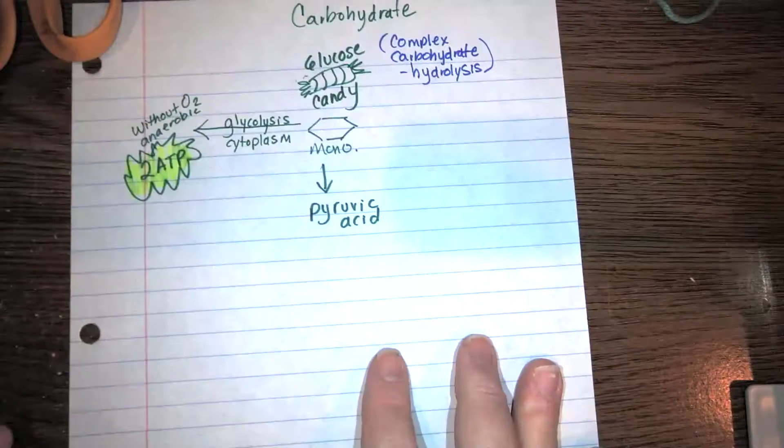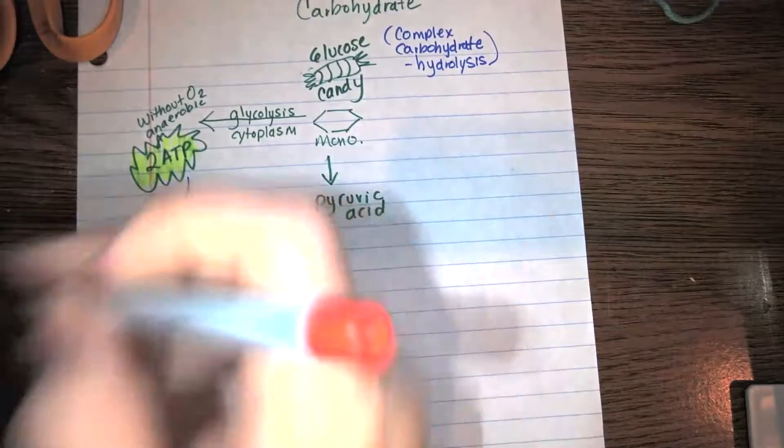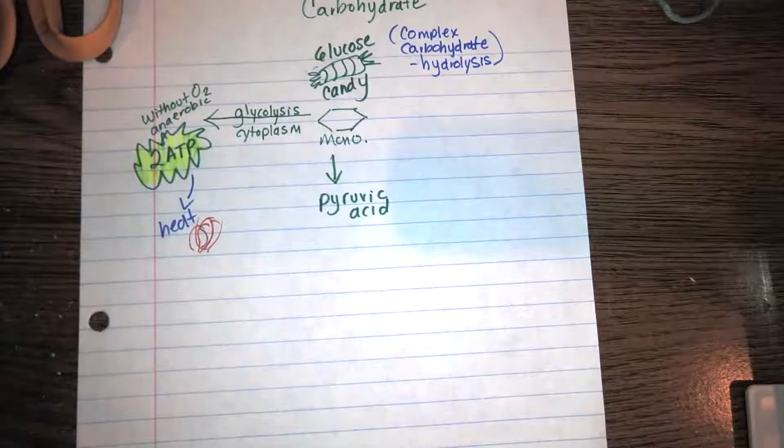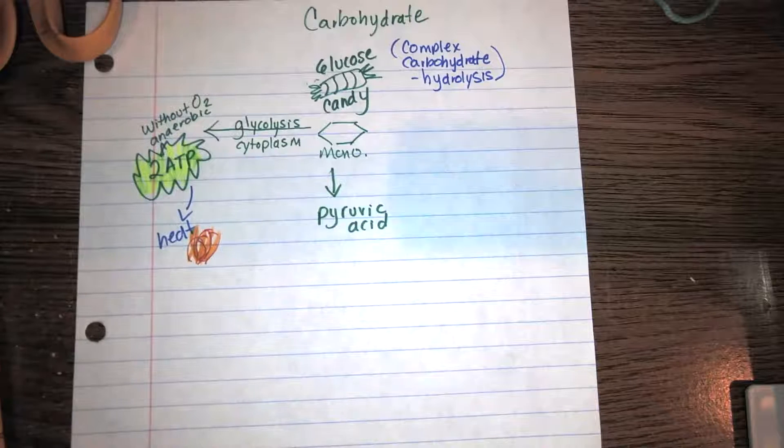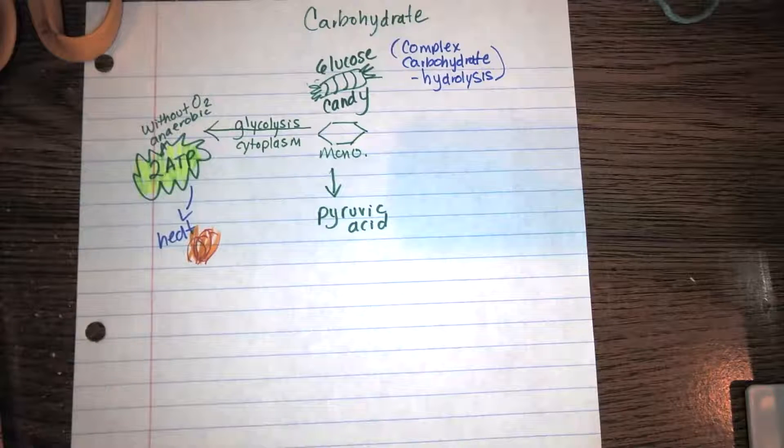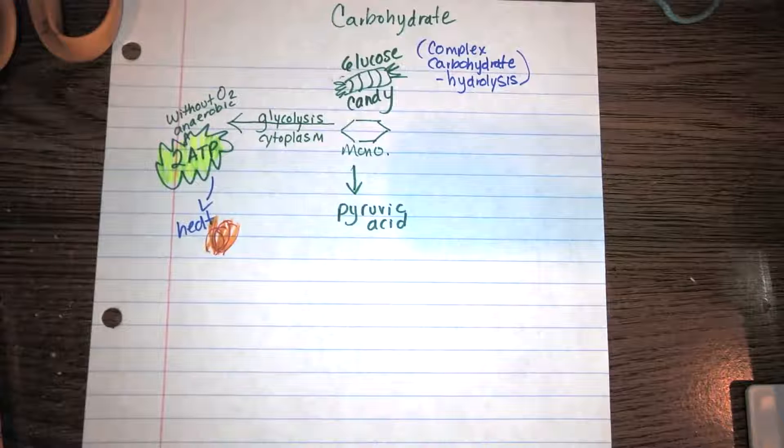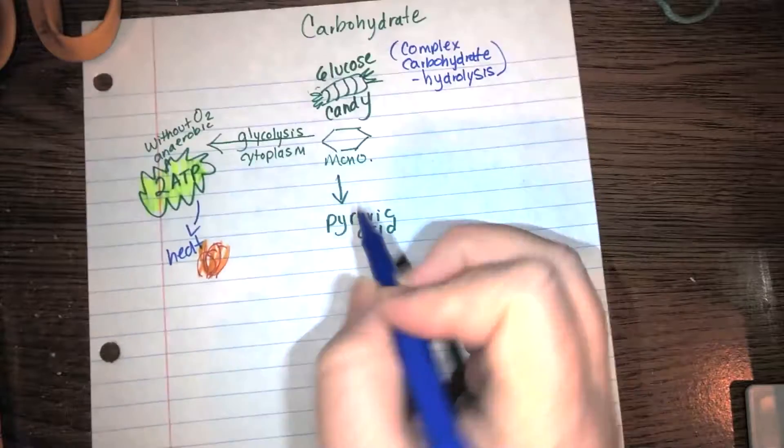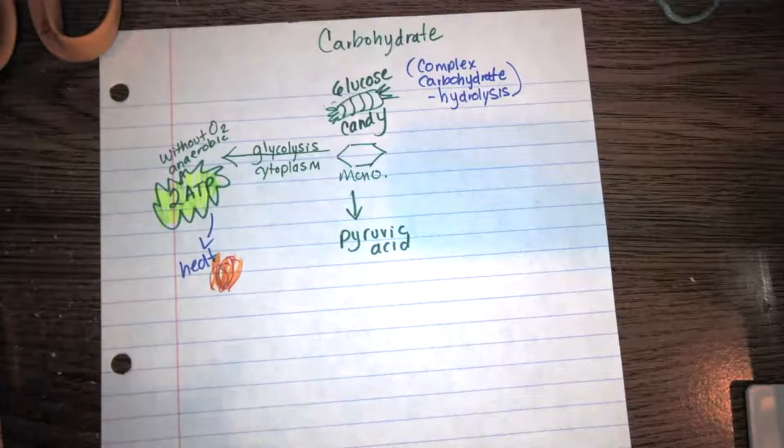So every time I write ATP, I'm going to color that in yellow because that's energy. You also get heat as a waste product. So I'm going to draw some flames. You're going to draw some flames. So this pyruvic, this process right here again is necessary. That's because this pyruvic acid is really important in the next step of breaking the sugar down.